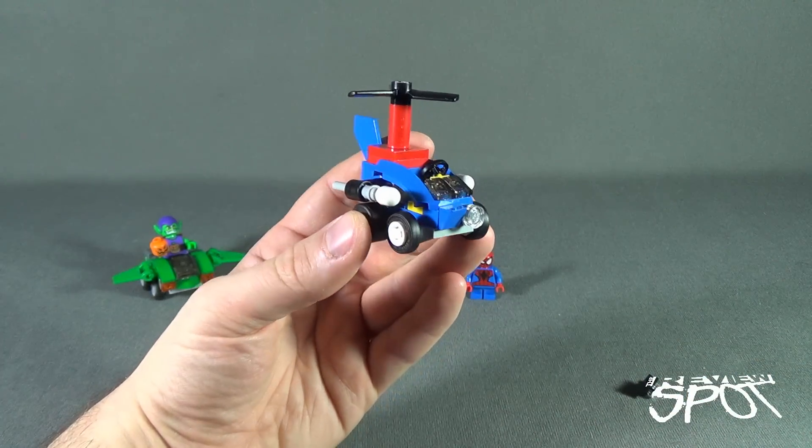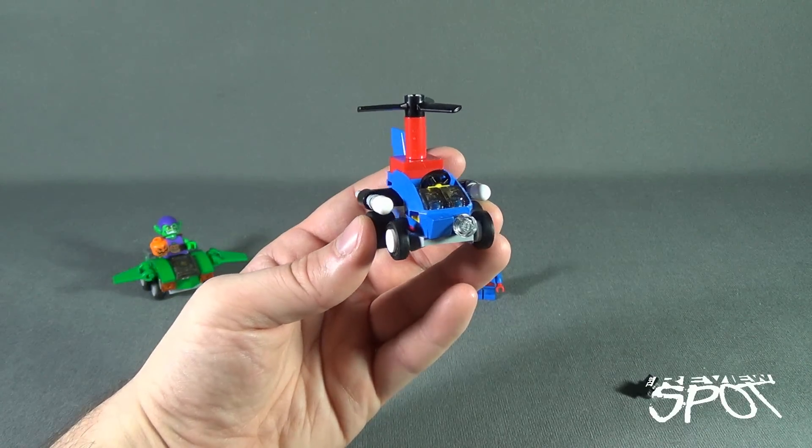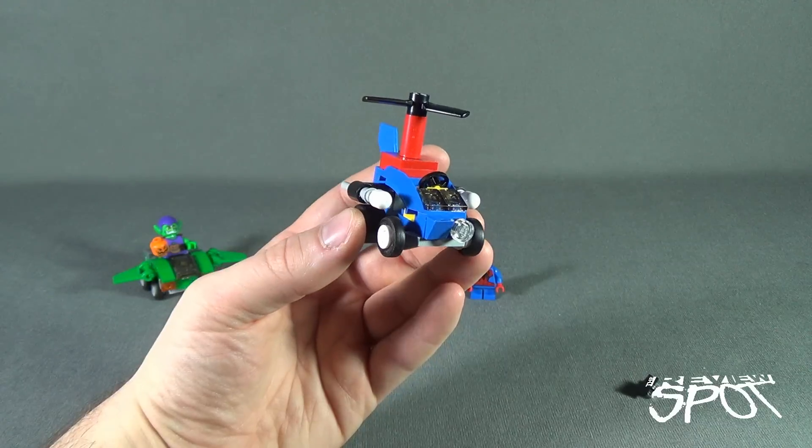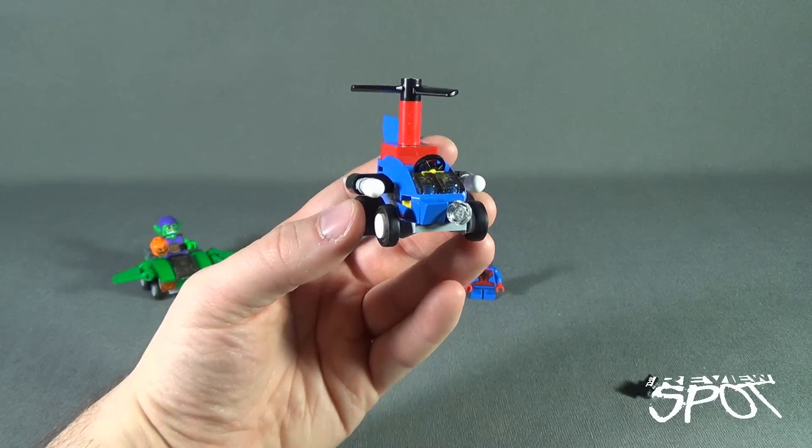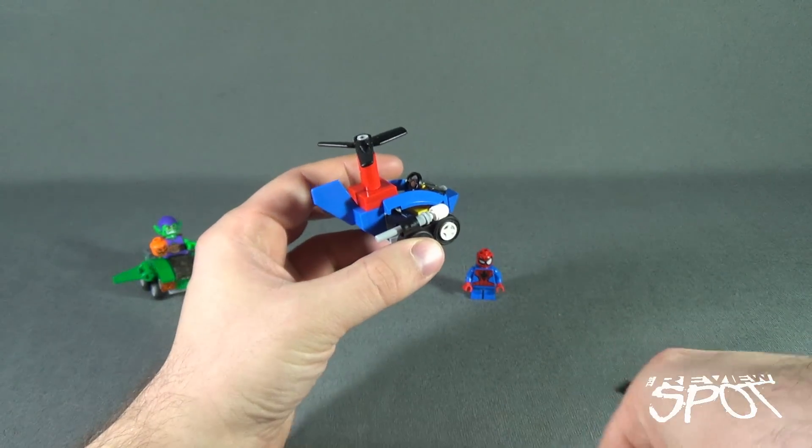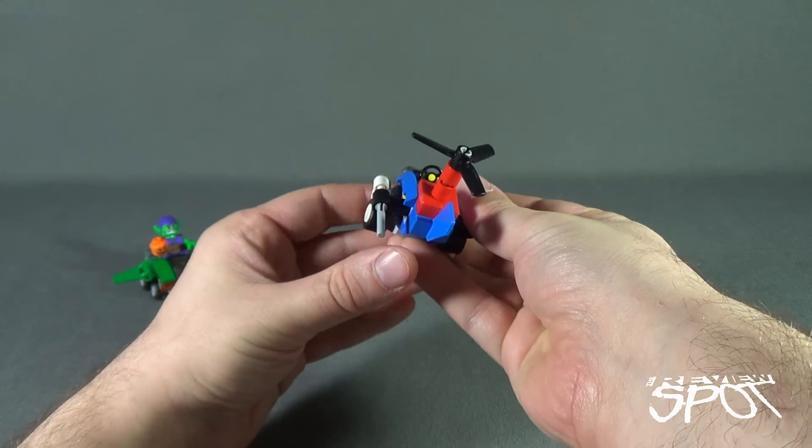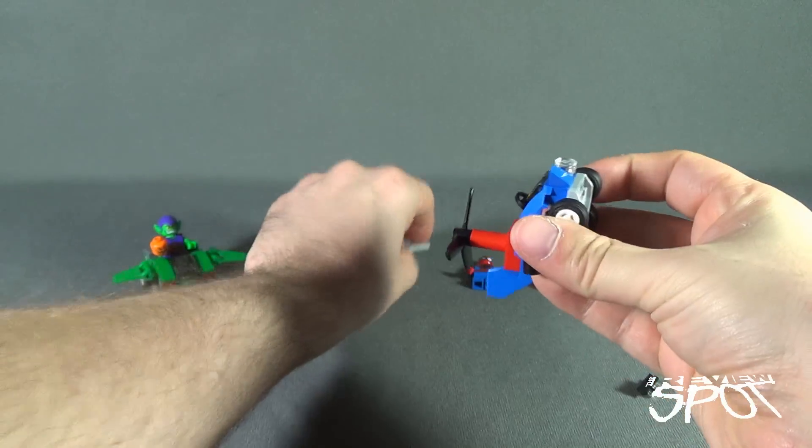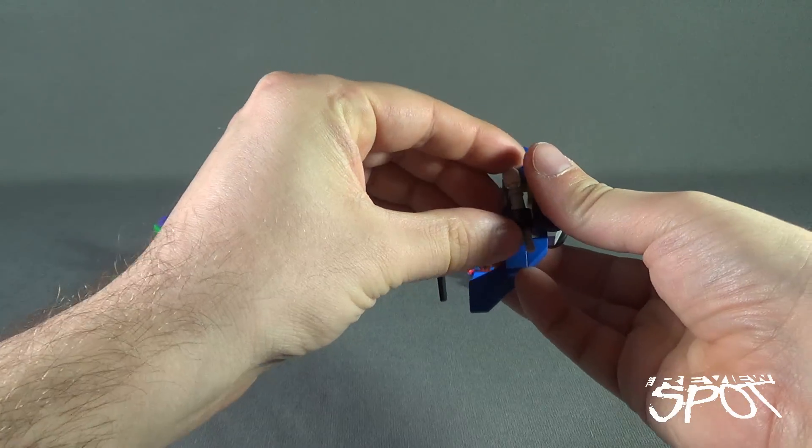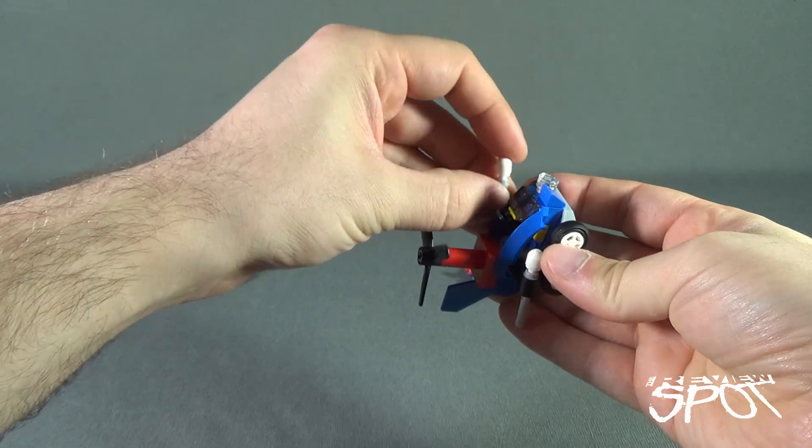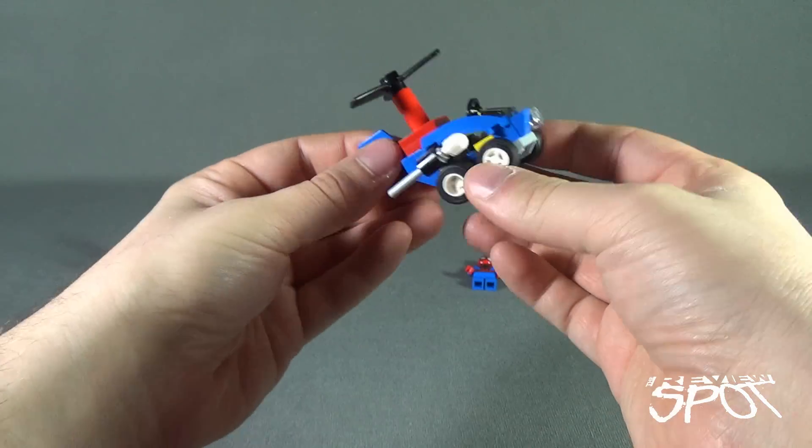It does have flick fire missiles - pop and pop. I mean they don't go really all that far. At least he does have rolling tires, that's also to be expected. Two small tires in the front, two large tires in the back.